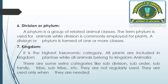A phylum is a group of related animal classes — the term 'phylum' is used for animals while 'division' is used for plants, and a division or phylum is formed from one or more classes. Kingdom is the highest taxonomic category: all plants are in kingdom Plantae and all animals are in kingdom Animalia. Other subcategories like suborder, subfamily, and tribe exist but are only used when needed; the seven main taxonomic categories are the ones commonly used.